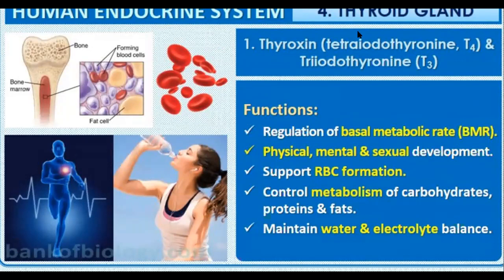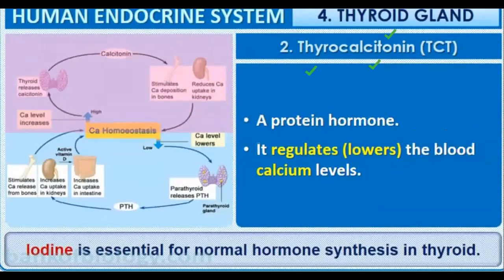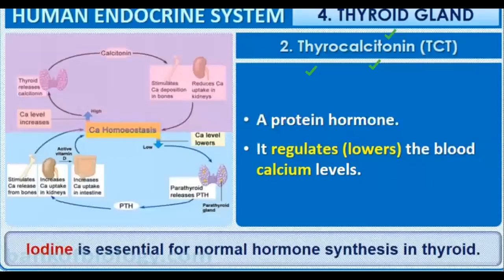The T3 hormone is known as triiodothyronine and T4 is tetraiodothyronine. These two hormones require iodine for their regulation. Next is thyrocalcitonin, which functions to lower the blood calcium level.